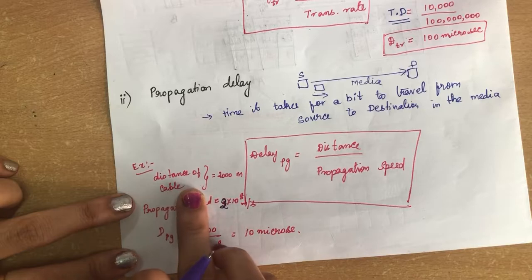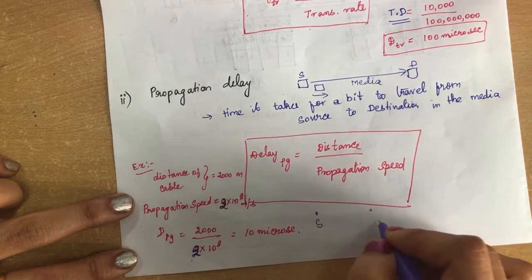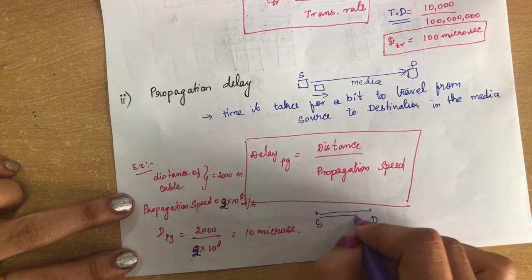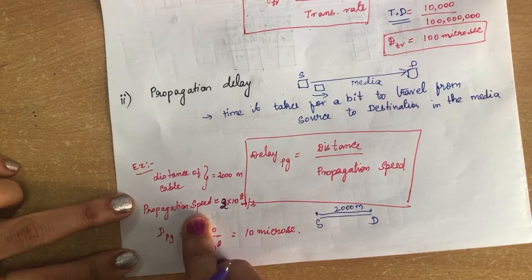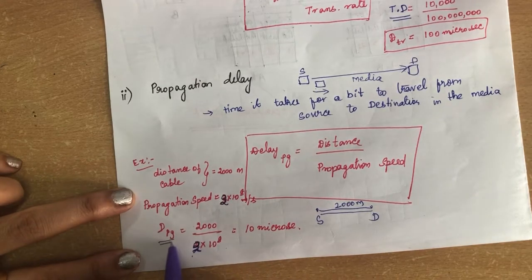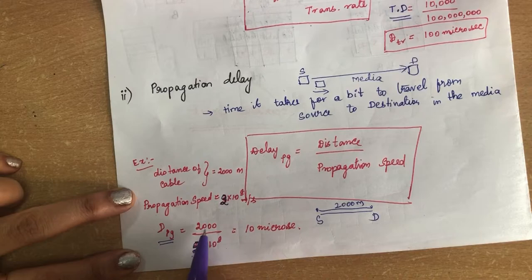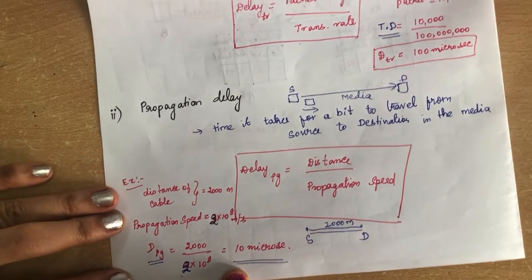We can calculate propagation delay with the formula: distance divided by propagation speed. In this example, the distance of the cable is 2000 meters, and the propagation speed inside the cable is 2 × 10⁸ meters per second. So propagation delay (dpg) = 2000 divided by 2 × 10⁸, which gives us 10 microseconds.